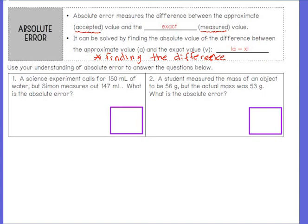Basically, to find absolute error we're finding the difference — just like in the change over original formula where we had to find the difference. So, it's the exact same concept; we're just learning new words. These two problems, we're just finding the absolute error — we're not finding the percent yet, we just want to know the difference. Number one says: a science experiment calls for 150 milliliters of water, but Simon measures out 147 milliliters. What is the absolute error?